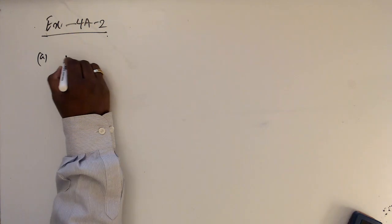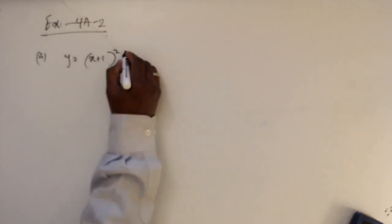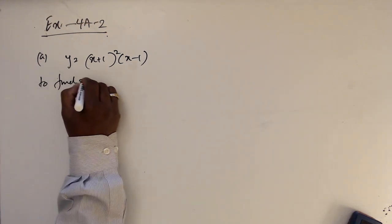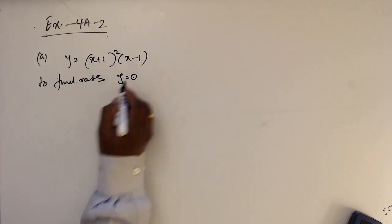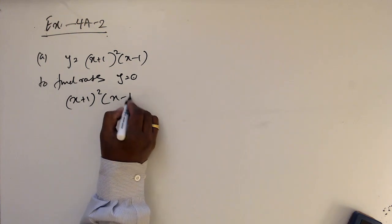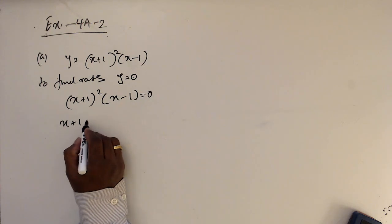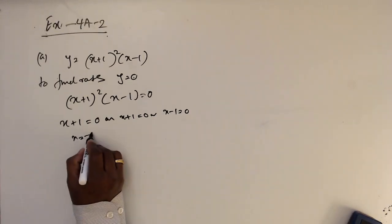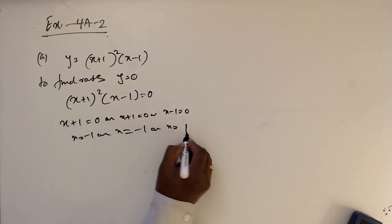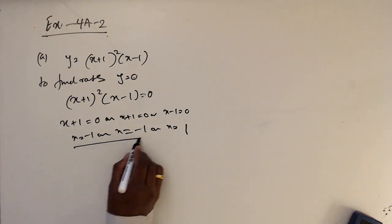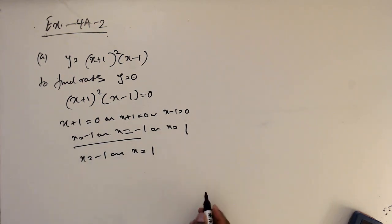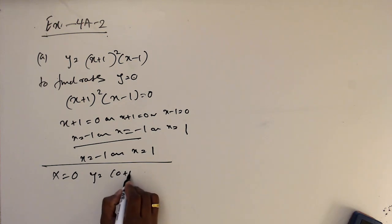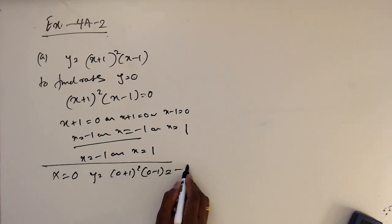For part A, y equals (x+1) squared times (x-1). To find roots, set y equal to 0: (x+1) squared times (x-1) equals 0. So x+1 equals 0 or x-1 equals 0, giving x equals minus 1 or x equals 1. When x equals 0, y equals (0+1) squared times (0-1) which is minus 1.